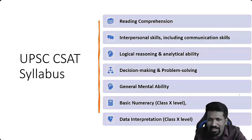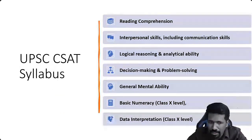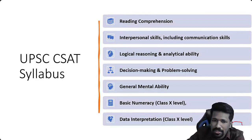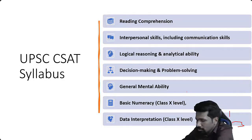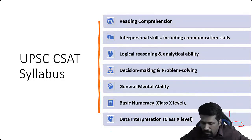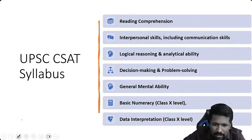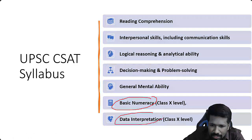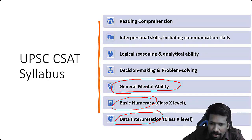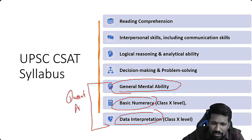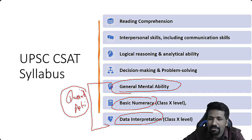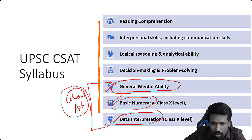The official UPSC CSAT syllabus mentions: Reading Comprehension, Interpersonal Skills including Communication Skills, Logical Reasoning, Analytical Ability, Decision Making and Problem Solving, General Mental Ability, Basic Numeracy, and Data Interpretation. To clarify: Basic Numeracy, Data Interpretation, and some areas of General Mental Ability form the unit called Quantitative Aptitude. Logical Reasoning and Analytical Ability form the Reasoning section. Reading Comprehension forms the comprehension section. Interpersonal skills and decision making had questions about 10 years ago but haven't appeared in the last 10 years.